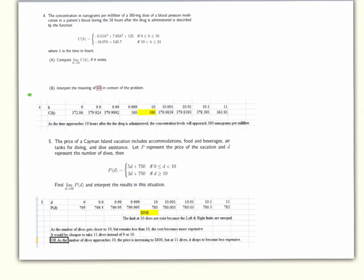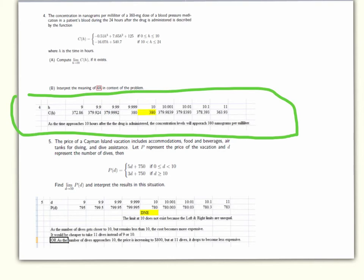I've already included the answers here because the answers are all available to you. And I just wanted to talk about what the answer is saying. If you look at this, all I've done is I've set up a piecewise function in Excel that does the function C of H. And so I've gotten very close to 10 from values below it, and then I've gotten very close to 10 from values above it. And what's happening here is we can see that that concentration is converging on the same value, 380. So we can say there as the time approaches 10 hours after the drug is administered, the concentration levels will approach 380 nanograms per milliliter.